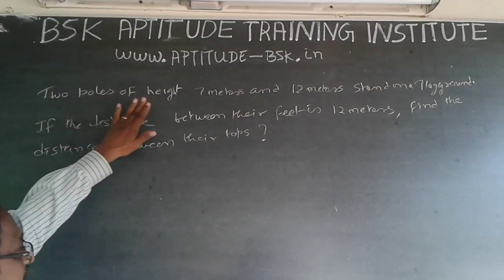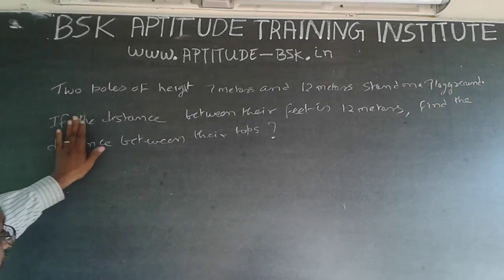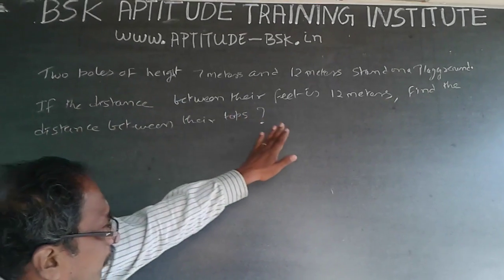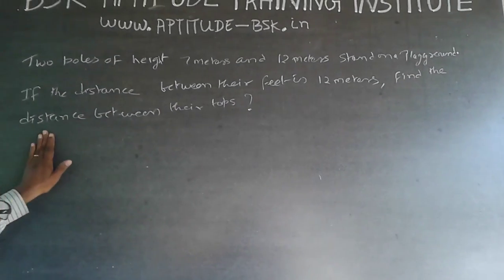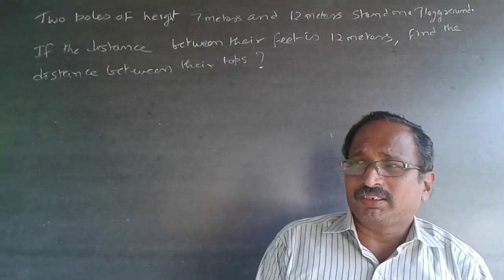The question is: two poles of height 7 meters and 12 meters stand on a playground. If the distance between their feet is 12 meters, find the distance between their tops.